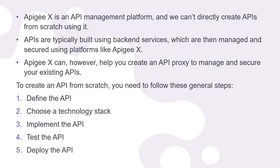Then, deploy the API to a suitable hosting environment such as AWS, Google Cloud, Heroku, or Azure. Set up a domain, configure SSL/TLS for secure communication — SSL stands for Secured Socket Layer and TLS for Transport Layer Security — and ensure proper scaling and load balancing.